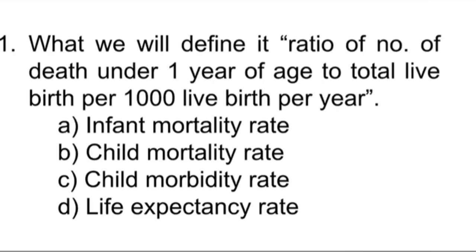What will define the ratio of number of deaths under one year of age to total live births per 1000 live births per year? Option A is infant mortality rate, option B is child mortality rate, C is child morbidity rate, and D is life expectancy rate.